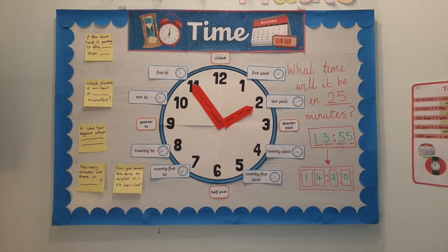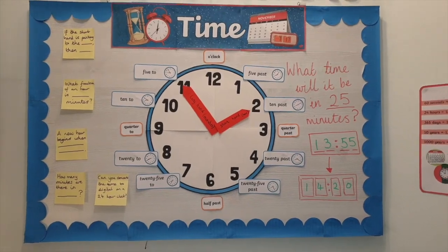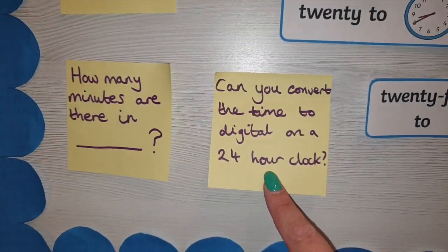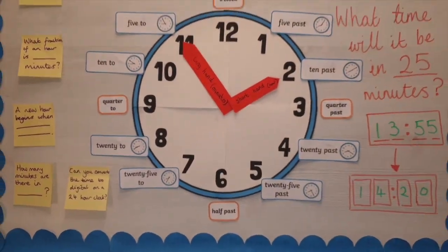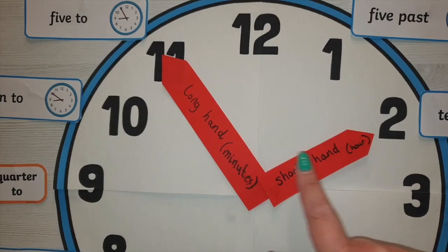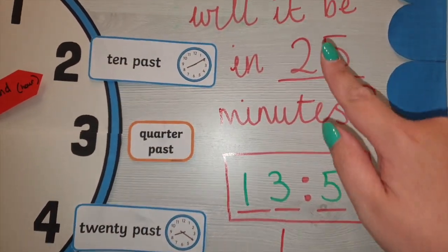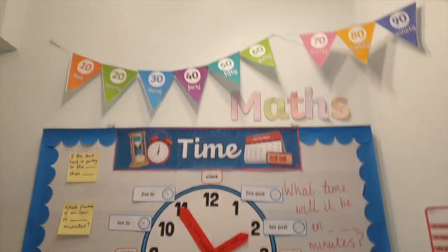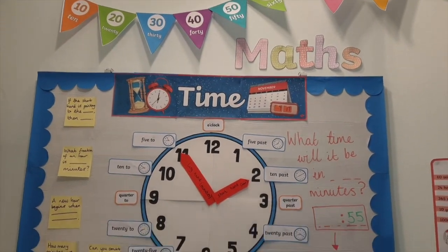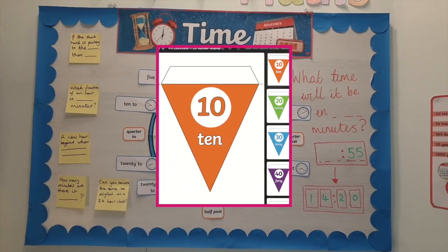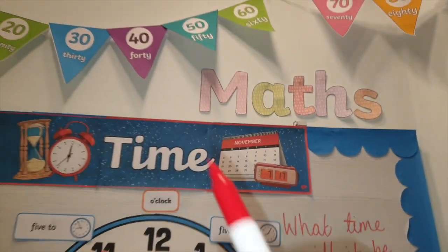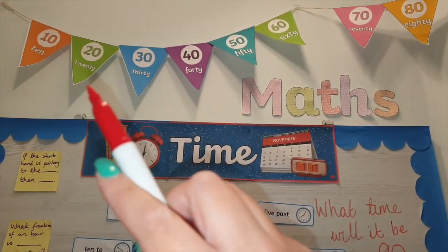So this is the finished display. You can see I added more questions and sentences that can be completed to show mastery understanding. I also added some writing to my clock hands — just 'short and long hands', 'hour and minutes'. Plus a converting time question that can easily be edited. You should also see bunting which is Twinkle's 10 to 120 intense number display bunting — I thought this would be helpful for kids who weren't too confident with their 10 times tables, and helpful when asking questions like 'what time will it be in half an hour'.